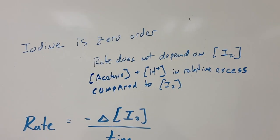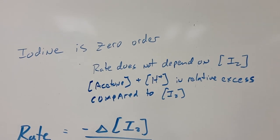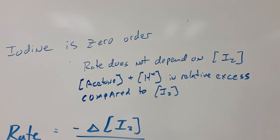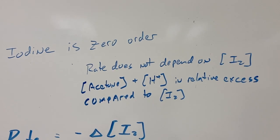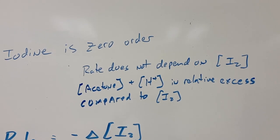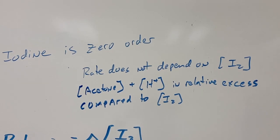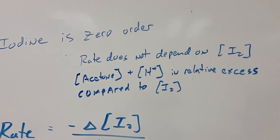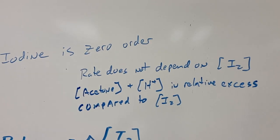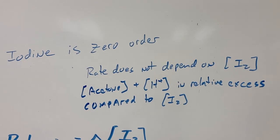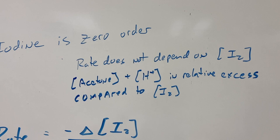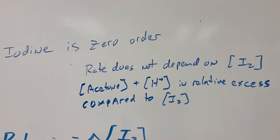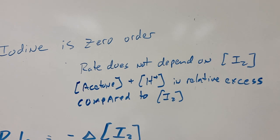In this reaction, it is known that iodine is zero order. When something is zero order, the rate does not change based on the concentration of that reactant — so whatever the concentration of iodine is, the change in concentration of products per time does not change if the concentration of iodine changes. The acetone and hydrochloric acid are both present in relative excess; their concentrations are much higher than that of the iodine. This means we're going to have essentially a constant reaction rate throughout.